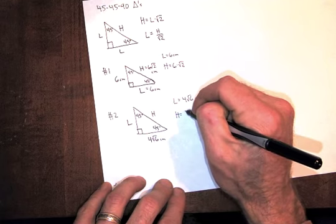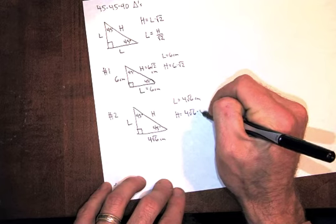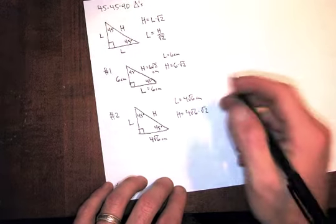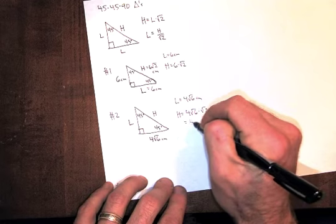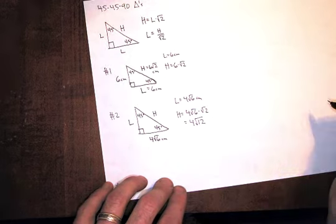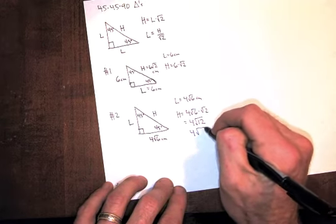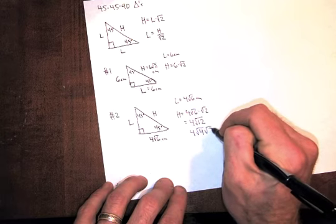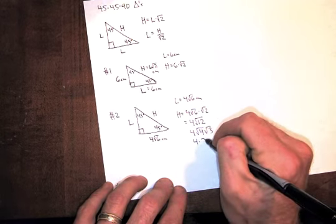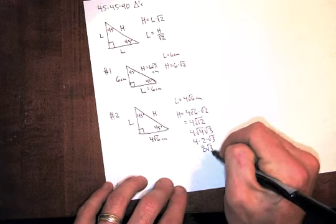H equals L times square root of 2. So 4 square root of 6 times square root of 2. When you multiply radicals, remember you can multiply them together. That's a 6 and a 2. It could become 4 square root of 12. And remember how to simplify a radical. Break square root of 12 into square root of 4, square root of 3. Square root of 4 is 2. Final answer, 8 square root of 3.